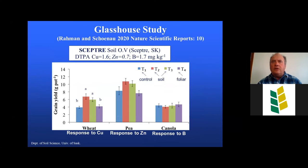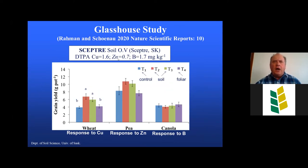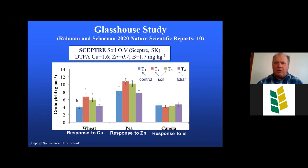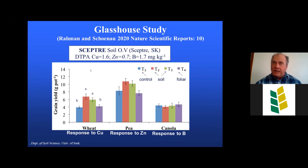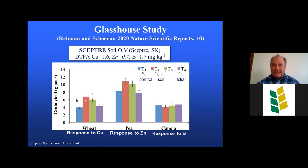Another glasshouse study, recently published, used a heavy clay soil from the Scepter area of Southwestern Saskatchewan with quite high extractable copper levels but low zinc. We looked at wheat, pea, and boron responses to micronutrients. We saw a positive trend for pea response to zinc fertilization, though not statistically significant. Unexpectedly, given the high extractable copper, we did see a statistically significant positive response to copper fertilization of wheat in this heavy-textured soil. In this case, soil applications appeared to work better than foliar application, possibly related to the timing of the foliar application.